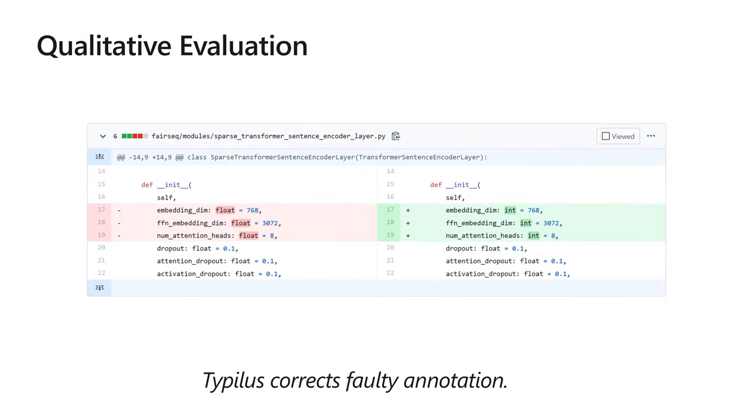We now take a more qualitative look at TypeLus suggestions. First, while we were doing error analysis, we observed some highly confident suggestions that seemed plausible. After manually checking them, we realized that some of the ground-truth type annotations were incorrect. Indeed, two popular open-source projects merged our pull requests fixing these annotations. One is shown in this slide.